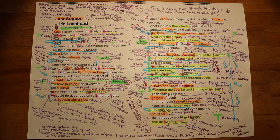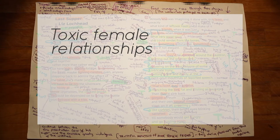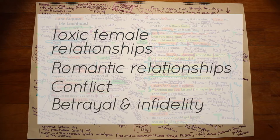In her poem Last Supper, Liz Lochhead explores the themes of toxic female relationships, romantic relationships, conflict and, to a lesser extent, betrayal and infidelity.